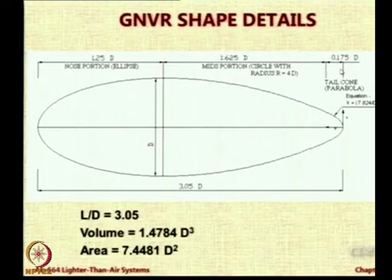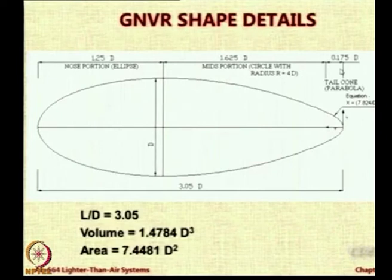Interestingly, behind the maximum diameter the slope of this particular shape is something like 1 to 7 — roughly 1.625D plus 1D plus 0.175D gives about 1.8 times diameter. Through wind tunnel testing and experience with aerodynamics of bodies, Professor Rao knew that if you reduce the diameter at roughly 1 meter per 7 meters, you get a nice shape after max diameter — good from the aerodynamics point of view, from the flow control point of view, from the separation point of view.